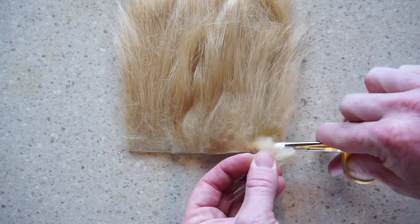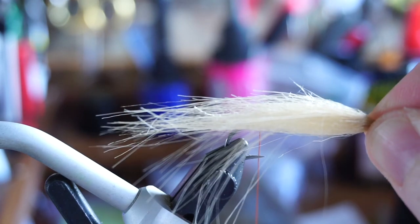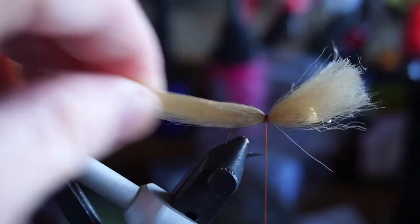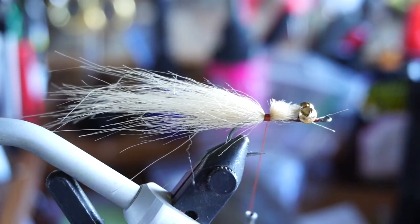Cut off about this much of the craft fur and clean out the under fur. Then tie this in on top of the hook shank like so, about two hook shank lengths from the bend of the hook. I like to clean up the shank section before proceeding with the next step.